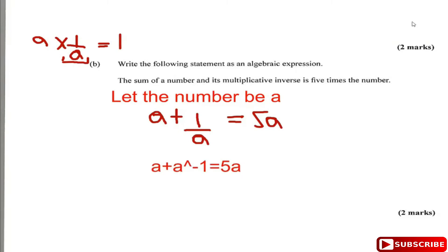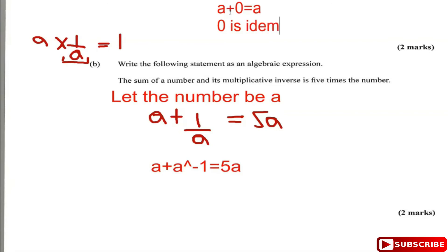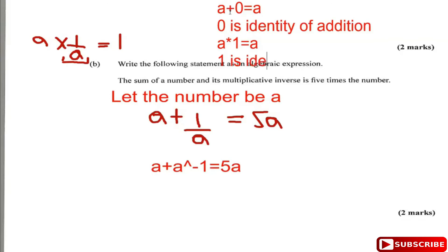Let's recall some important concepts. Identity: the identity of any number is such that when you add it to the original number, the result remains the same. For example, a plus 0 equals a, so 0 is the additive identity. Similarly, a times 1 equals a, so 1 is the multiplicative identity.